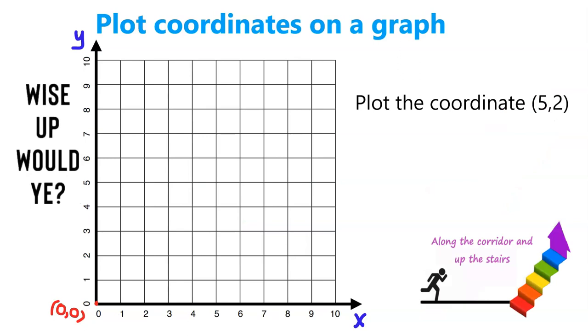Look at the question: plot the coordinate (5, 2). Well, we begin over at the origin and we're going to count along the x-axis, along the corridor, so we're going to count 5: 1, 2, 3, 4, 5. And then we're going to go up the stairs, 2, so up vertically 2, and we can mark our coordinate (5, 2). Here's the next question.